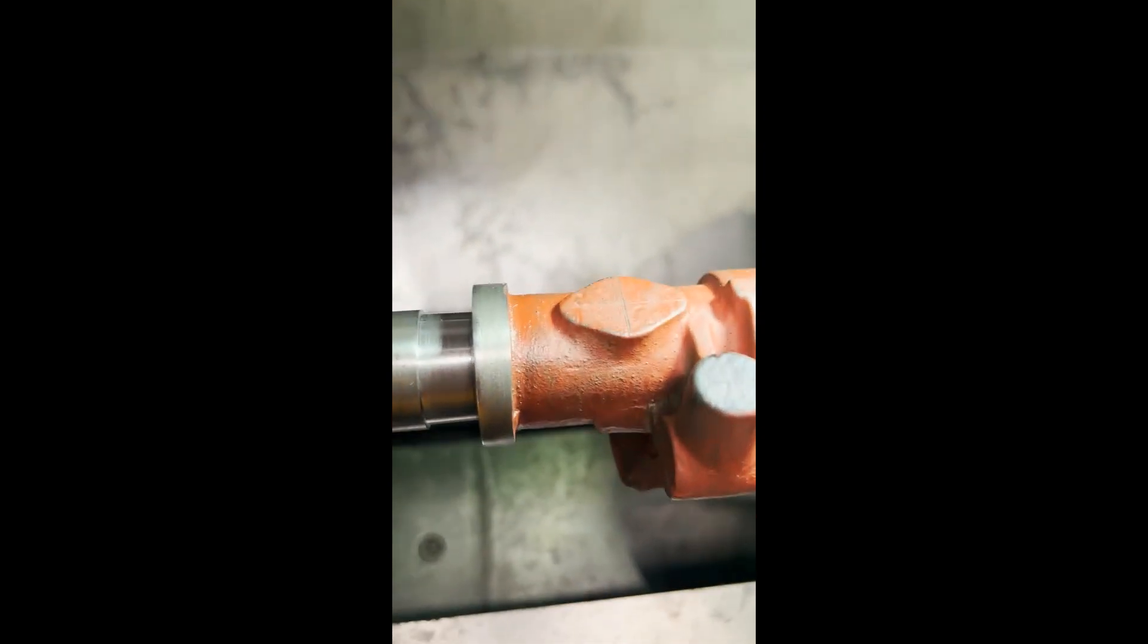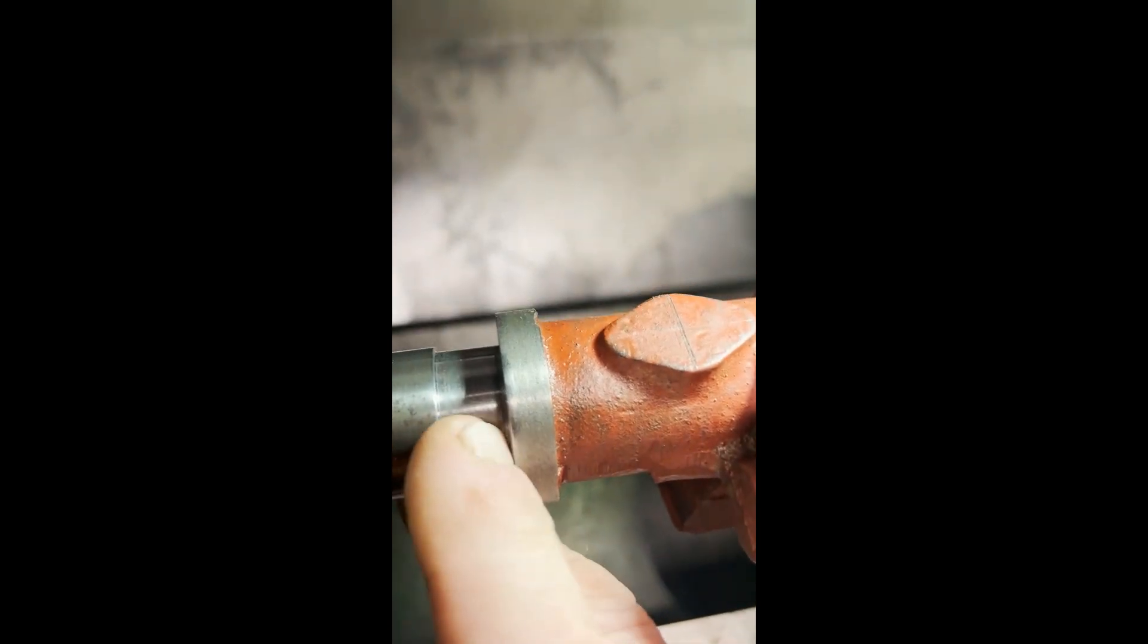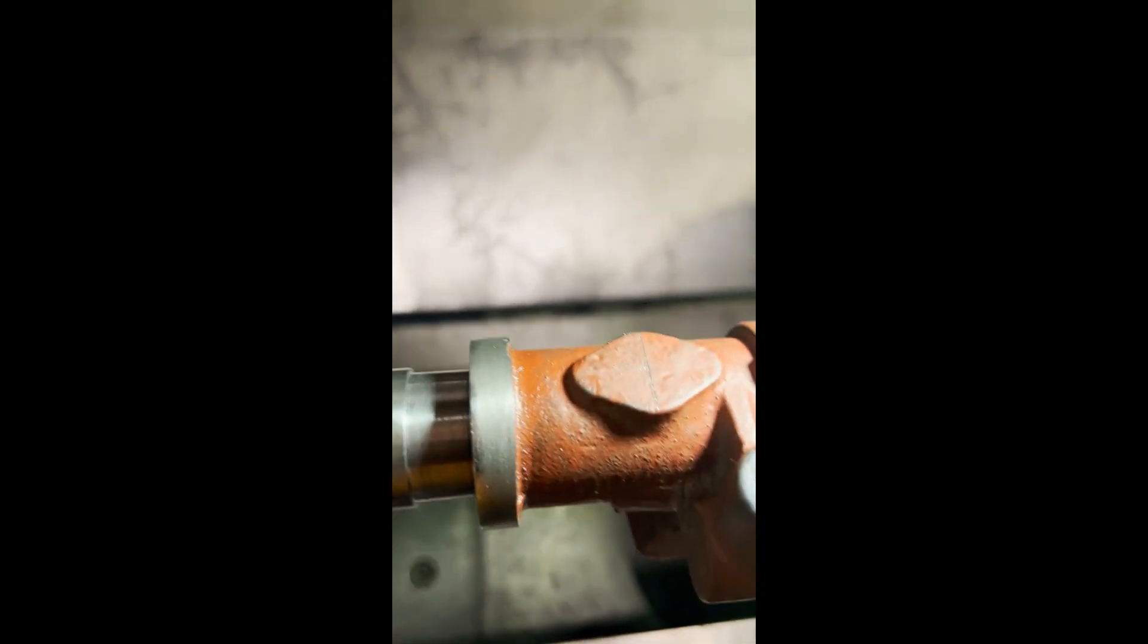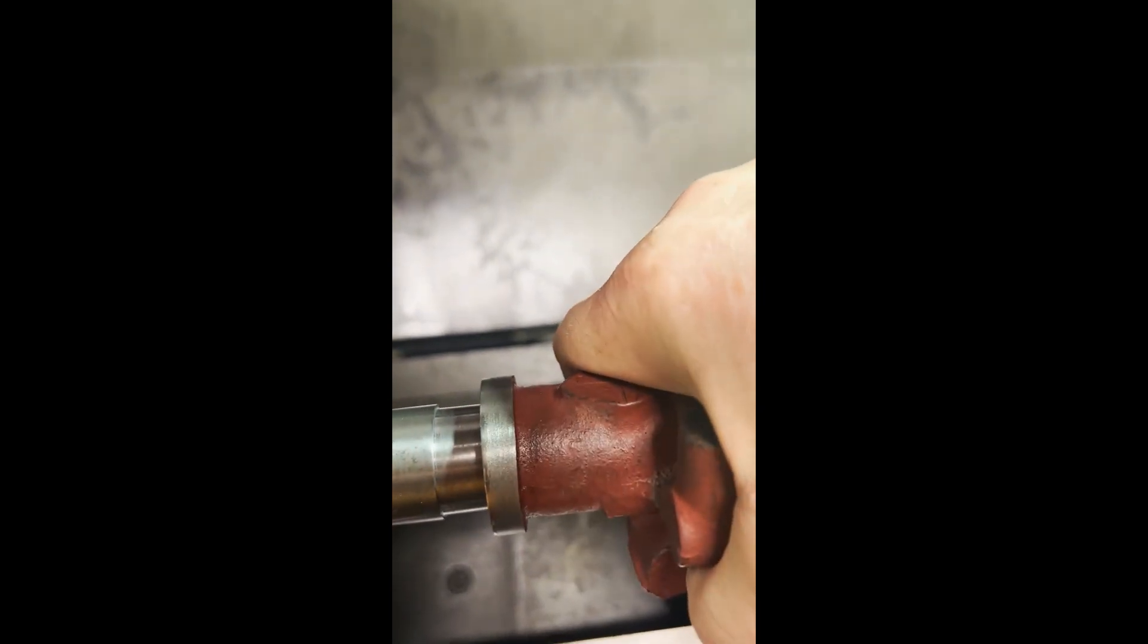Now, this is cast iron and obviously it doesn't really like being compressed. Because I'm putting it onto a taper, I don't want to make it crack, but I am going to tap the casting onto the mandrel just with a mallet. You only need some light taps, and then it is held.